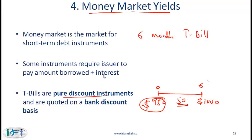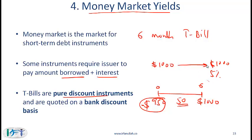We also have short-term instruments which are based on a borrowed amount plus interest. It is possible that a company issues a short-term bond where the company borrows $1,000 initially and then pays back $1,000 plus 5% interest at the end of one year. The market where short-term instruments such as this trade is called the money market, and in this segment we will talk about the various kinds of yields that are used in this market.